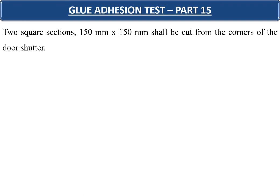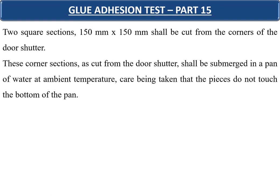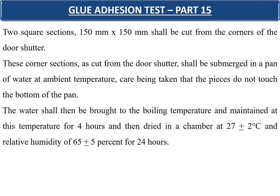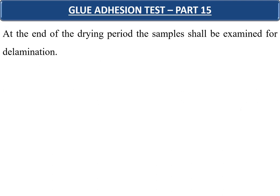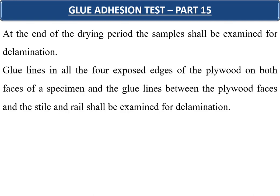Part 15 covers the glue adhesion test. Two square sections of 150 by 150 mm are cut from the corners of the door shutters. These sections are submerged in water at ambient temperature, ensuring pieces do not touch the bottom of the pan. The water is brought to boiling temperature and maintained for four hours, then dried at 27 ± 2°C and 65 ± 5% relative humidity for 24 hours. At the end of the drying period, samples are examined for delamination of glue lines on all four exposed edges and between plywood faces and the style and rail.